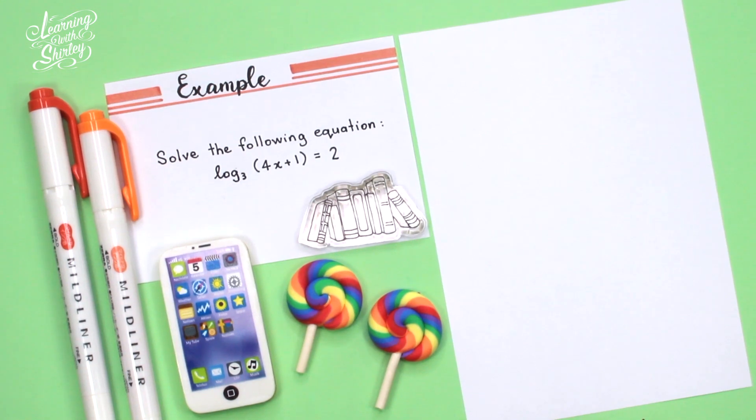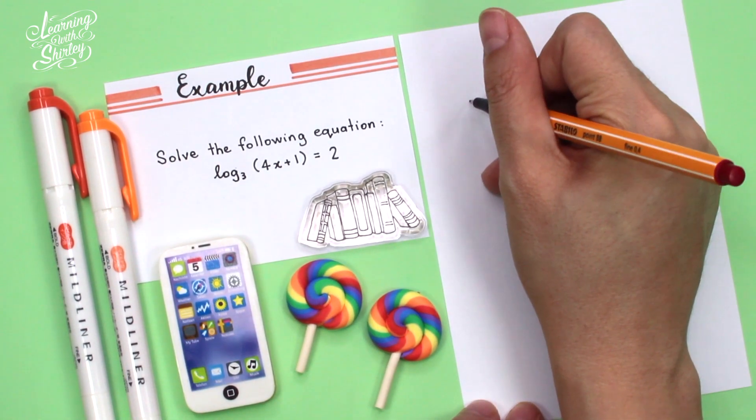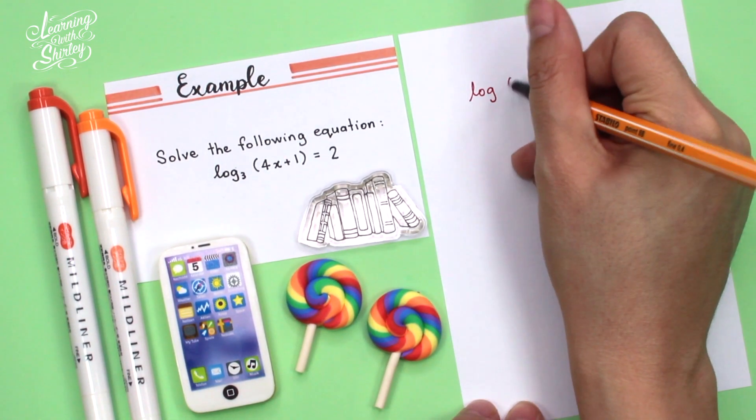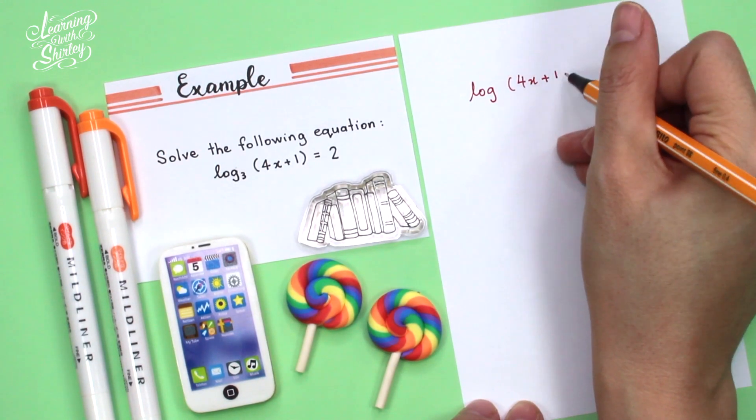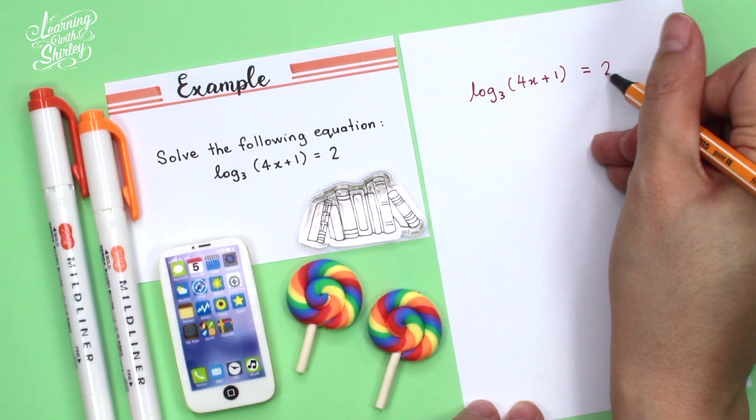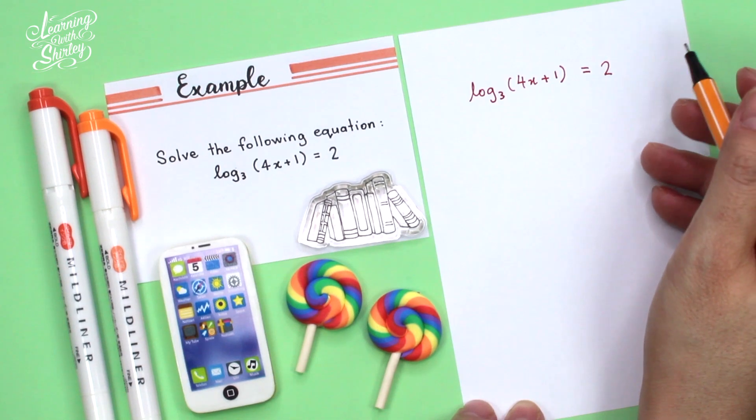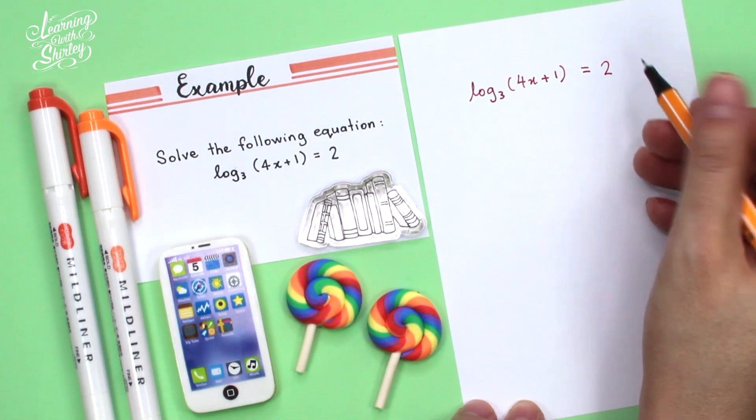Solve the following equation: log 4x plus 1 base 3 equals to 2. So first of all, I'm going to write down the question here, which is log 4x plus 1 base 3 equals to 2. So this is in logarithm form, so we have to change it to index form in order to solve the value for x.